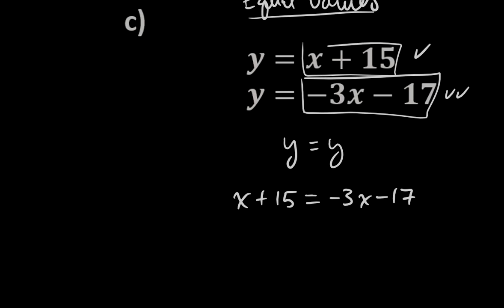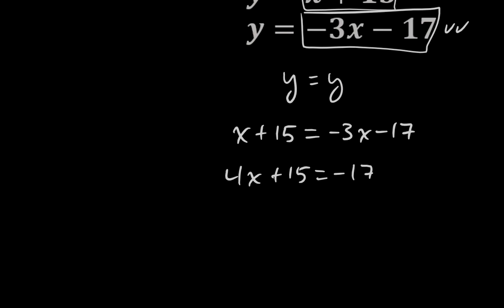I can add 3x to both sides, so that'll give me 4x plus 15 equals negative 17. And I'll subtract 15 from both sides. When I take away 15 from negative 17, I'm at negative 32. And when I divide both sides by 4, I get that x is the number negative 8.